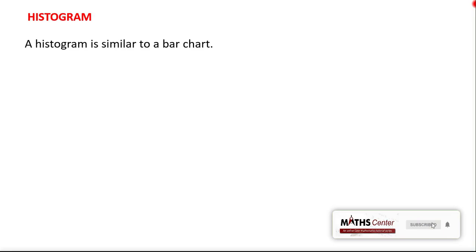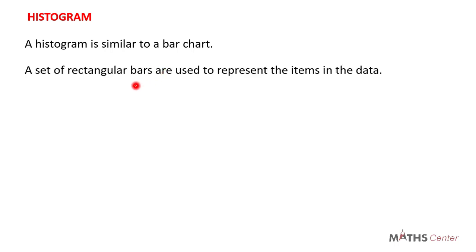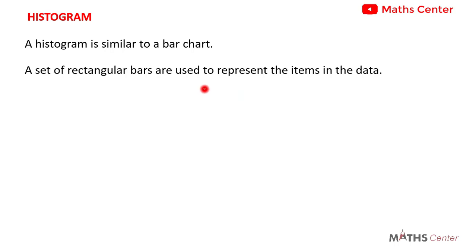A histogram is similar to a bar chart, so we are going to look at some of the similarities that exist between a histogram and a bar chart. On a histogram, a set of rectangular bars are used to represent the items in the data, just as we have on a bar chart.